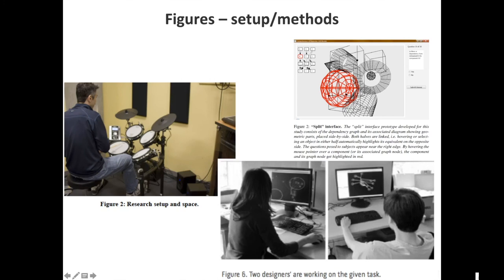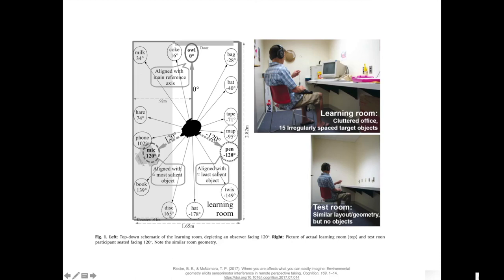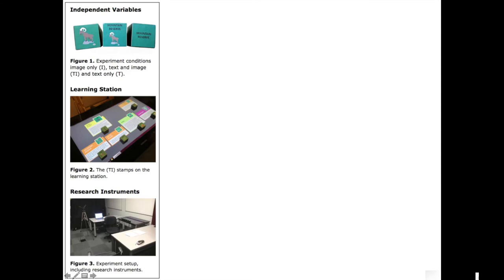Here's a little simple setup for a study. Here's also two designers working on a given task and showing the actual screenshot — this can be useful. Make sure this kind of thing also works in grayscale. Here's an example where you had a learning room and a test room that looked fairly similar but with no objects in the test room. Putting that into text is a lot harder, so sometimes pictures can really help.